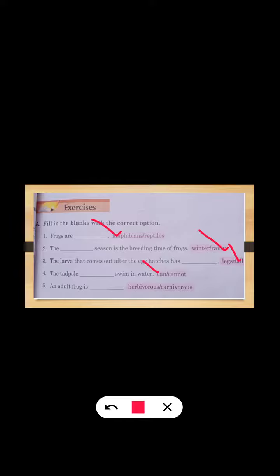The fifth one is: An adult frog is [blank] - carnivorous. The previous one was the exercise of chapter number four, and now we are going to solve the exercise of chapter number five. So this is the exercise of chapter number five.